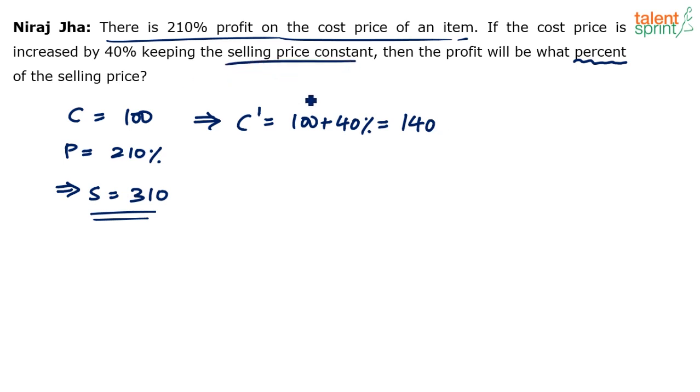Keeping the selling price constant, the selling price S dash is equal to the original selling price, which is 310. Then the profit will be what percent of the selling price? What is the profit? You know that profit is selling price minus cost price, S dash minus C dash. So 310 minus 140, which comes out to be 170. The profit is equal to 170.